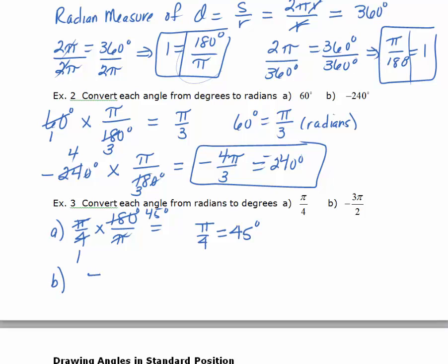For the last one, negative 3π over 2: multiply by 180 over π. The π's cancel. 2 goes into itself once, goes into 180 ninety times. Multiplying across gives negative 270 degrees, so negative 3π over 2 radians equals negative 270 degrees.